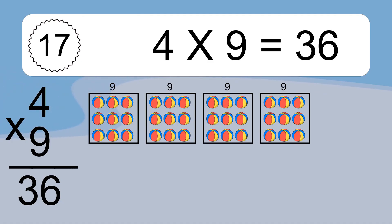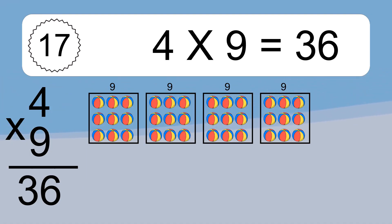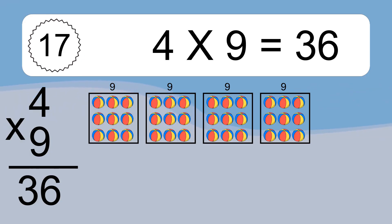4 times 9 equals what? We have 4 boxes, and each box has 9 colorful balls inside. If you count all the balls in all the boxes together, you will have 4 times 9 balls. This equals 36 balls.